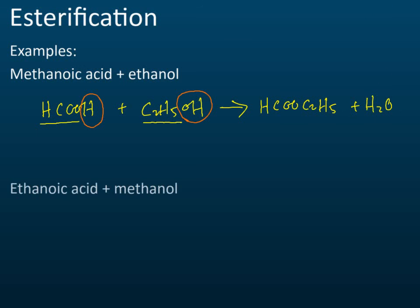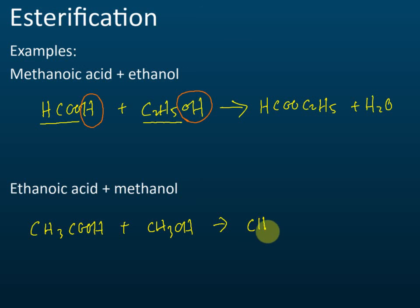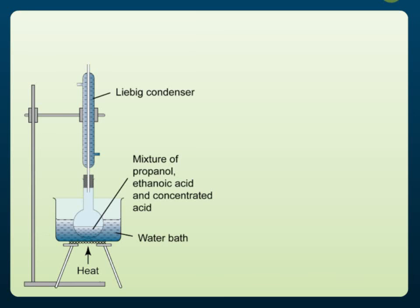Another example: ethanoic acid CH₃COOH plus methanol CH₃OH. The product is CH₃COOCH₃ plus water. For the apparatus set-up, we use a Liebig condenser with reflux because we have alcohol and we want to prevent the alcohol from escaping to the surroundings.